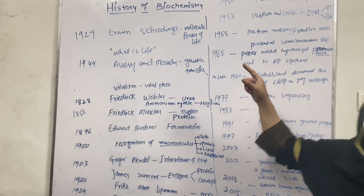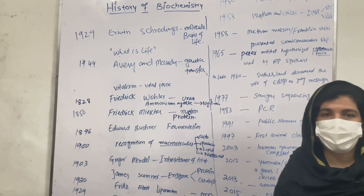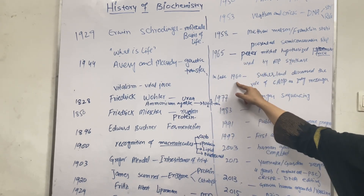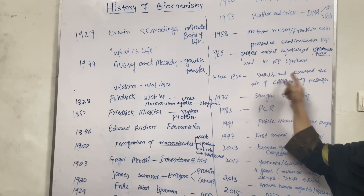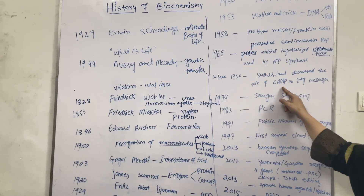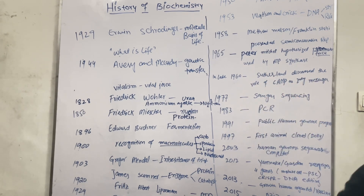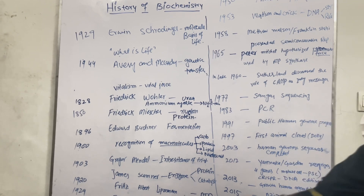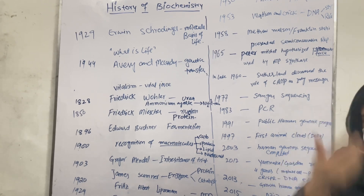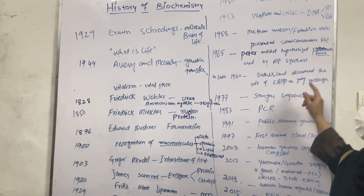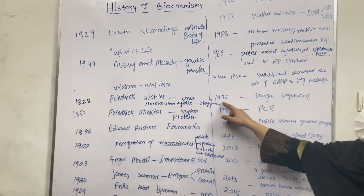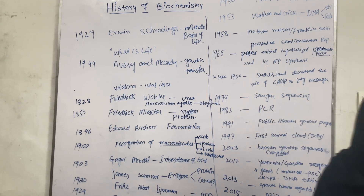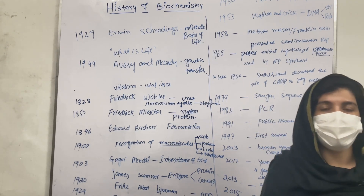In the late 1960s, Sutherland discovered the role of cyclic AMP as a secondary messenger. In 1977, Sanger gave the concept of DNA sequencing.